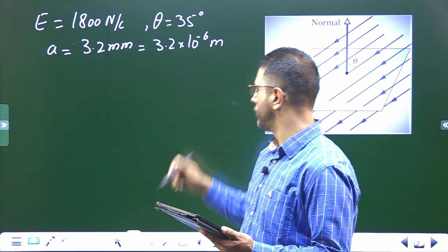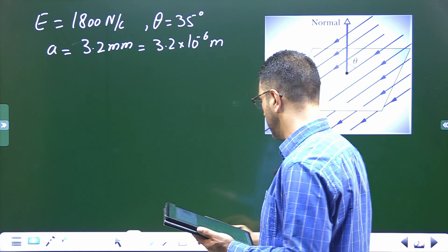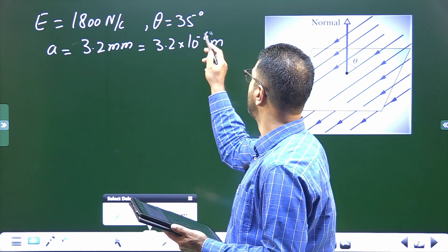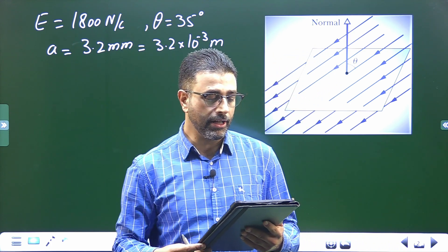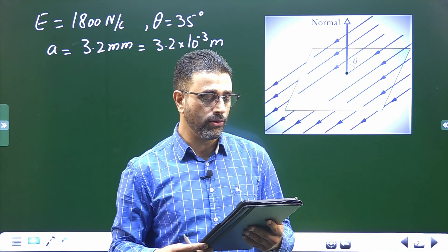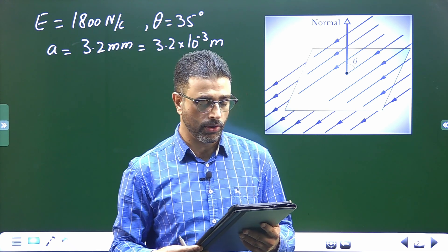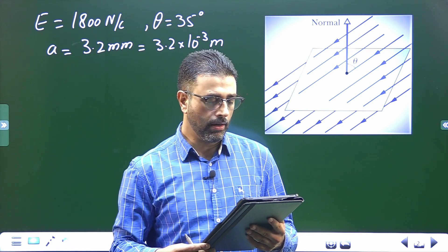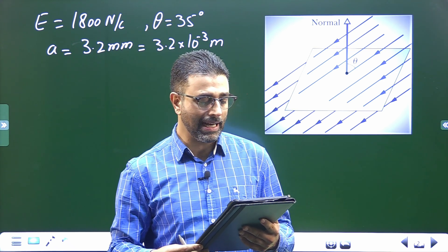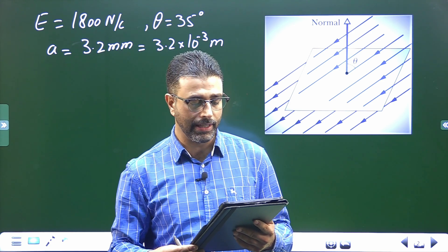Which is 3.2 into 10 to the power minus 3. It is immersed in a uniform electric field with magnitude E equal to 1800 Newton per Coulomb, and with field lines at an angle of theta equal to 35 degrees.